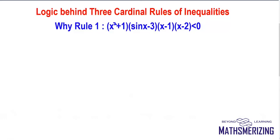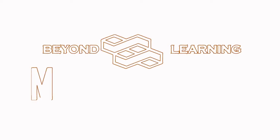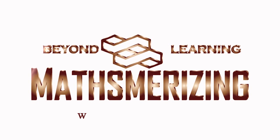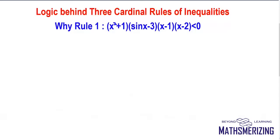In this video, we'll examine what is the logic behind three cardinal rules of inequalities. The first rule is: in an inequality, if there are certain expressions that don't change sign, we remove those expressions from the inequality, keeping the sign.